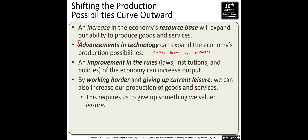A second way to shift the PPC outward is improvement in rules — laws, institutions, and policies that increase output. For example, when 18th-century patents were introduced, there was a sudden jump in the production possibilities curve because people wanted to obtain patents and reap the benefits.